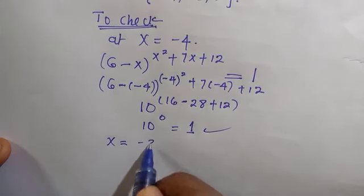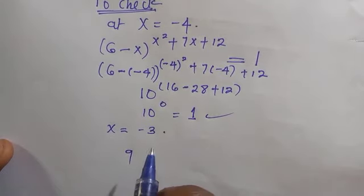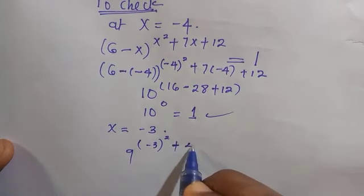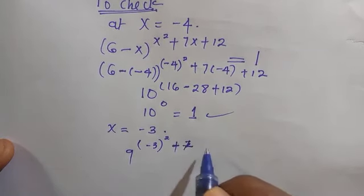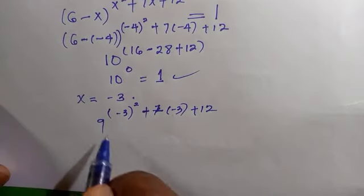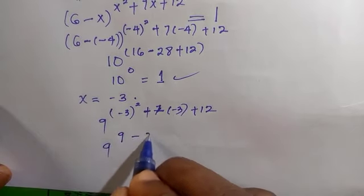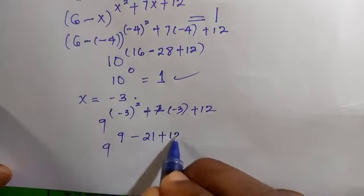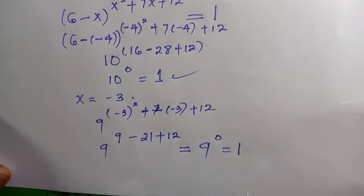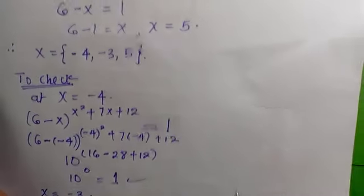For x = -3, we plug in and get 9^((-3)² + 7(-3) + 12) = 9^(9 - 21 + 12) = 9^0 = 1. Since 9^0 = 1, x = -3 also satisfies the equation.